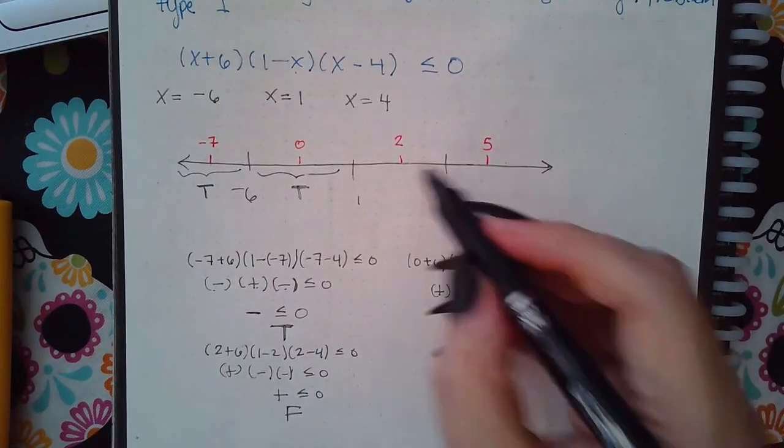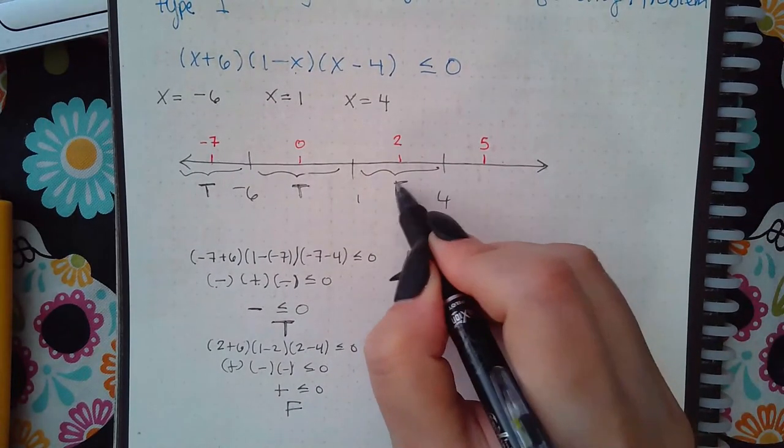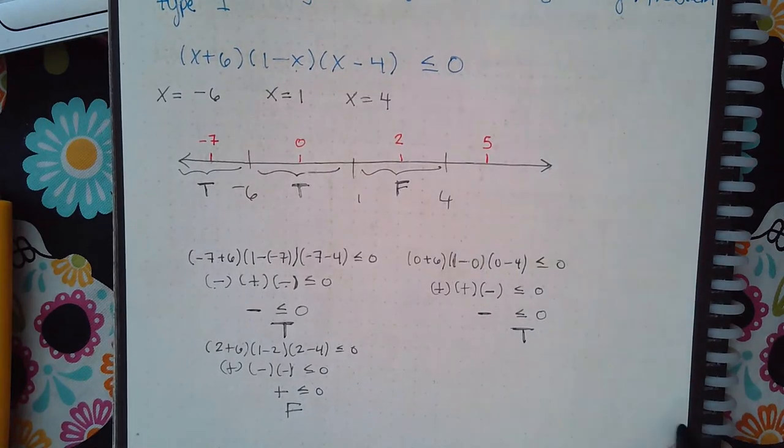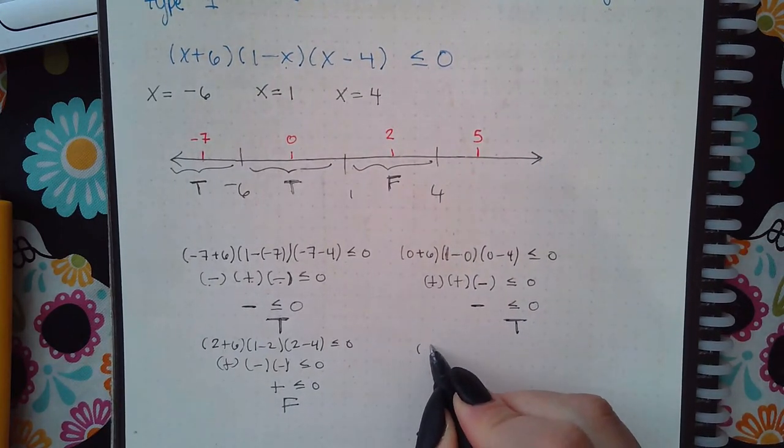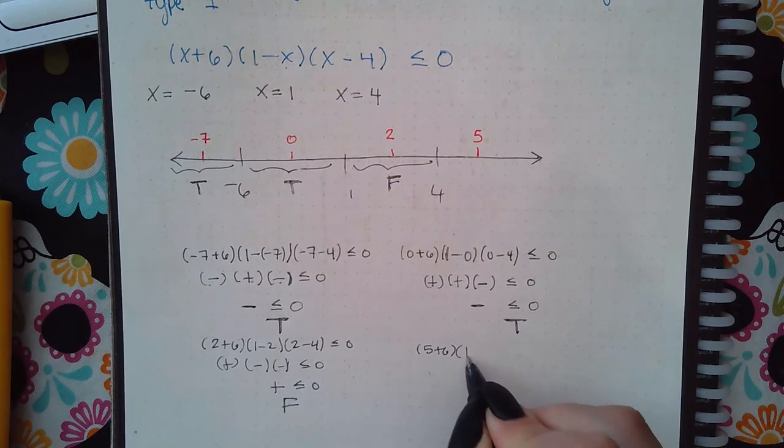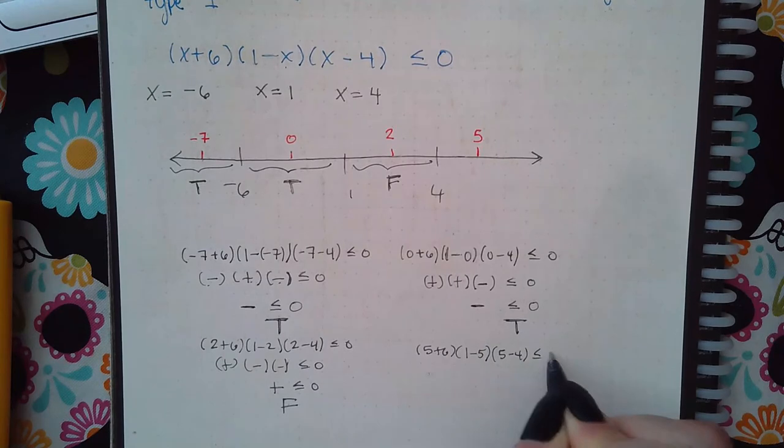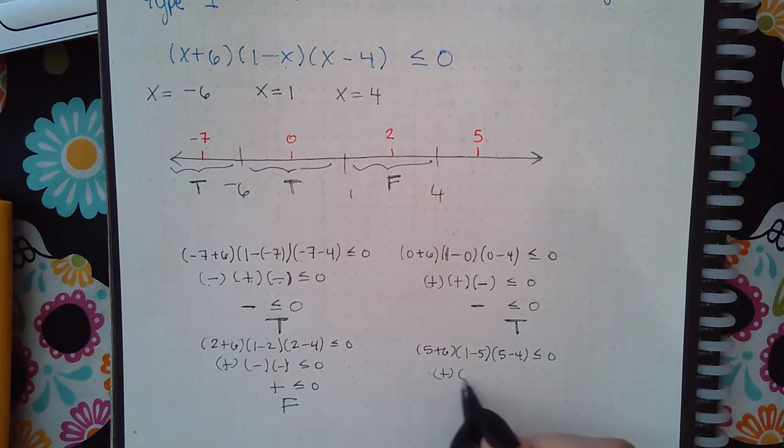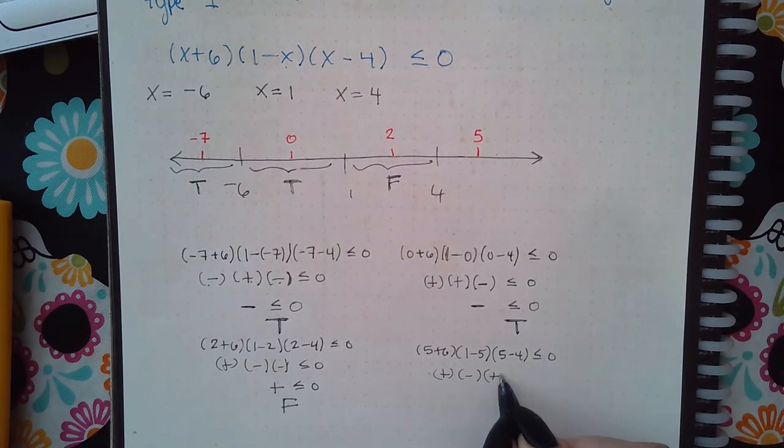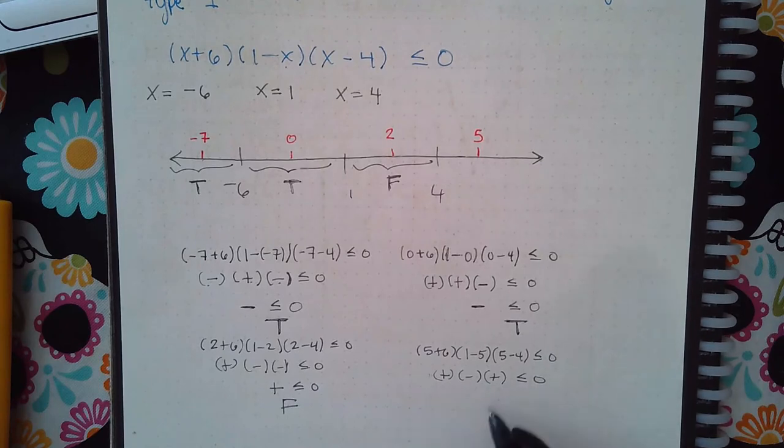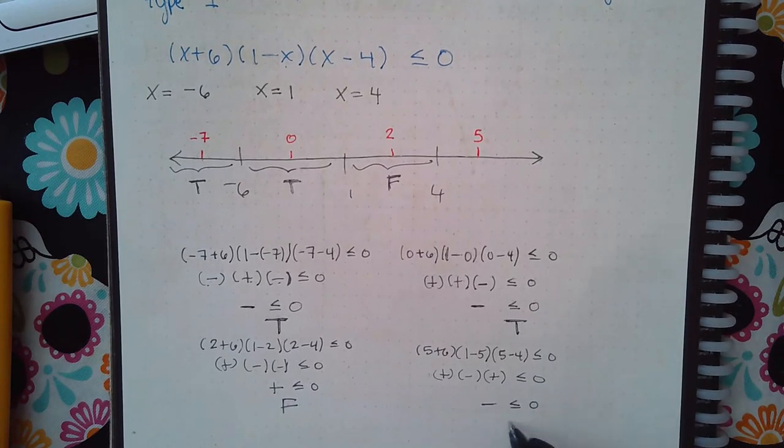Now the last one, I'm going to test 5: 5 plus 6, 1 minus 5, 5 minus 4. I get a positive, a negative, and a positive, so that's going to be negative in the end and that is true. So this interval is true.